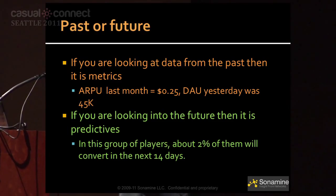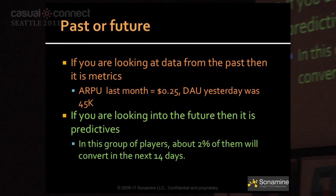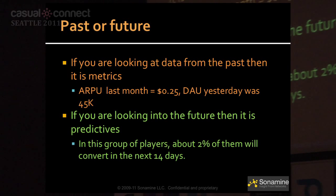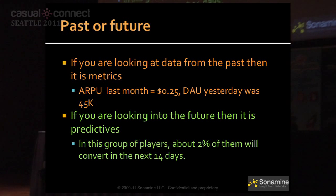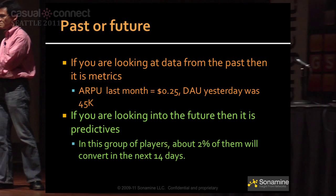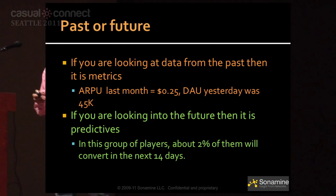Now it's time to apply predictives to games. How do you identify one? First: if you're looking at the past, you're looking at a metric; if you're looking into the future, it's a predictive. Is it a past number or a future number? Very straightforward.